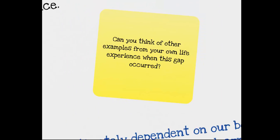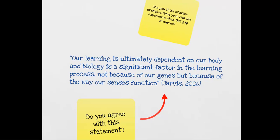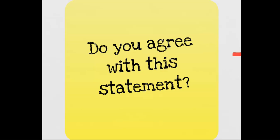The learner is more than just a cognitive machine because learning begins with our five human senses. As Jarvis states, our learning is ultimately dependent on our body, and biology is a significant factor in the learning process — not because of our genes, but because of the way our senses function. Do you agree with that statement?